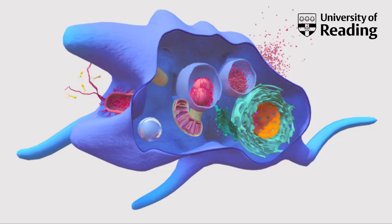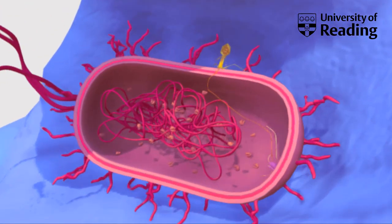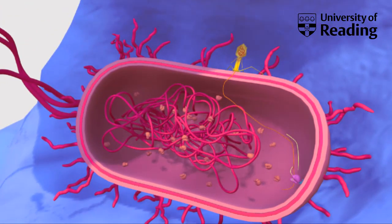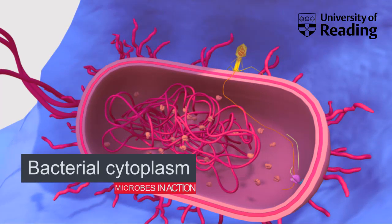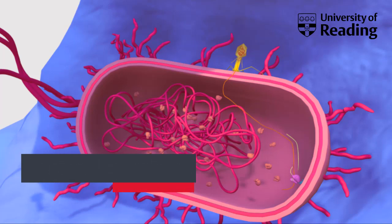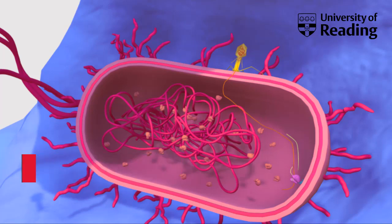Let's start by zooming in to look at the bacterial cell. The term cytoplasm is used to describe all of the components inside the cell. It includes the cytosol, a colourless gel-like matrix composed mainly of water, salts, and small organic molecules.